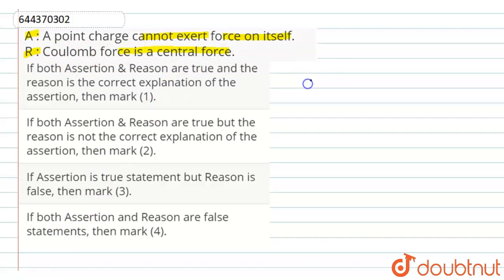We know that according to Coulomb's law, the electrostatic force of attraction or repulsion between two charged particles is directly proportional to the product of their charges and inversely proportional to the square of the distance between them.